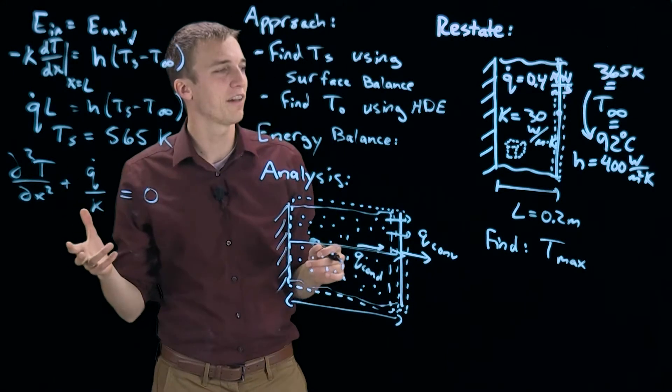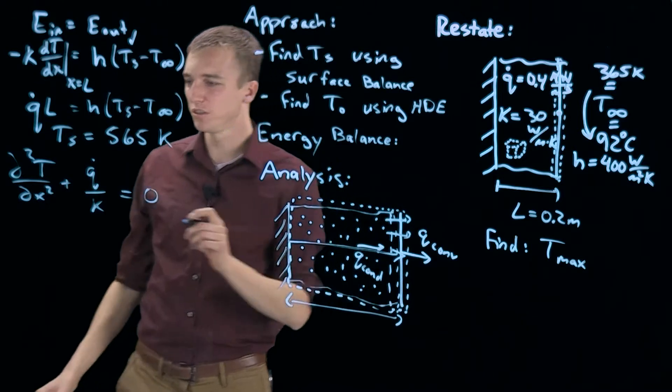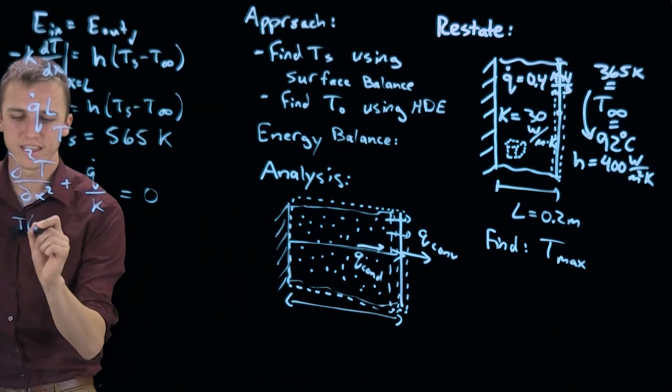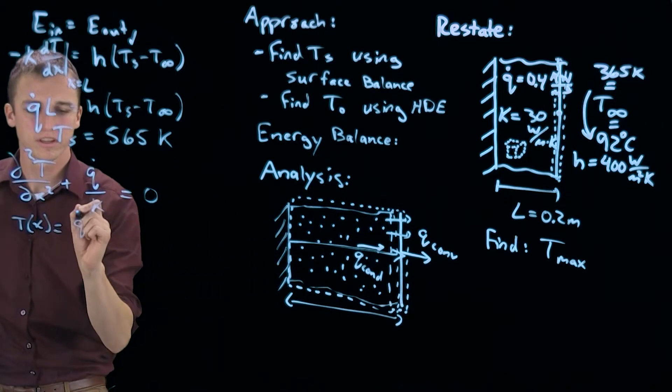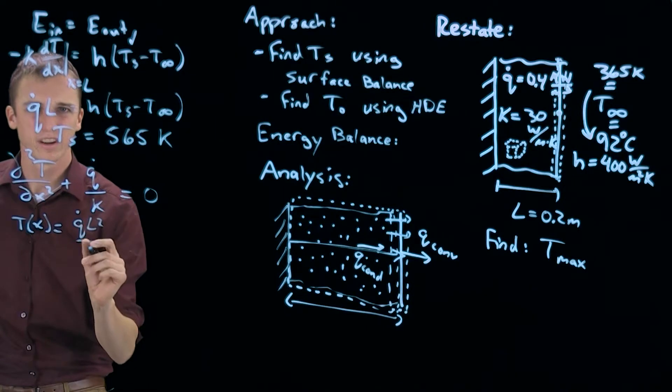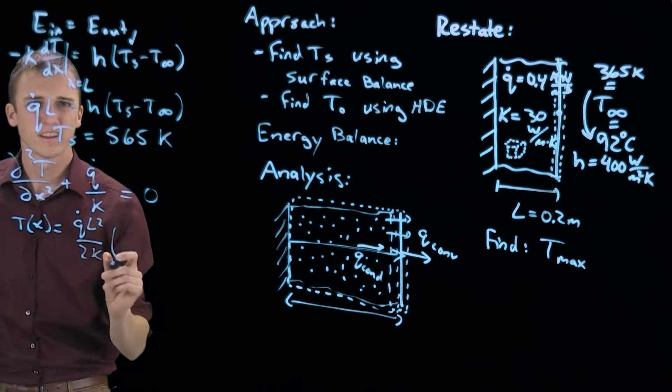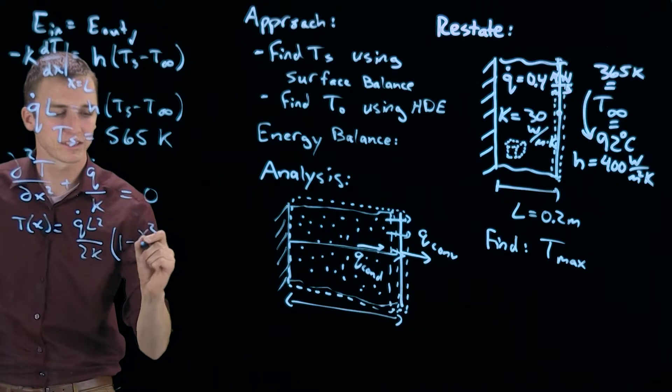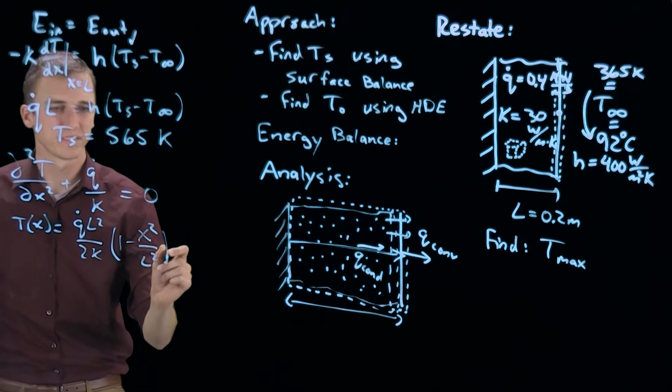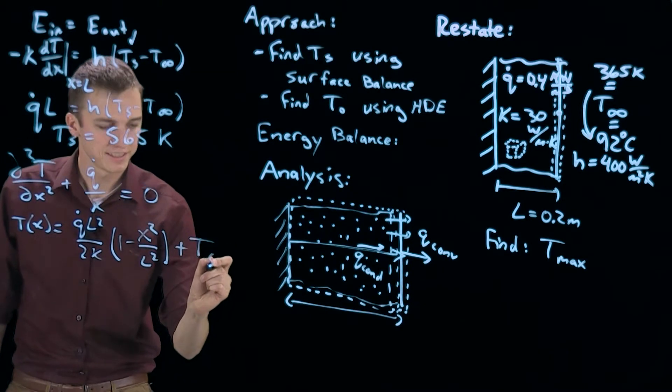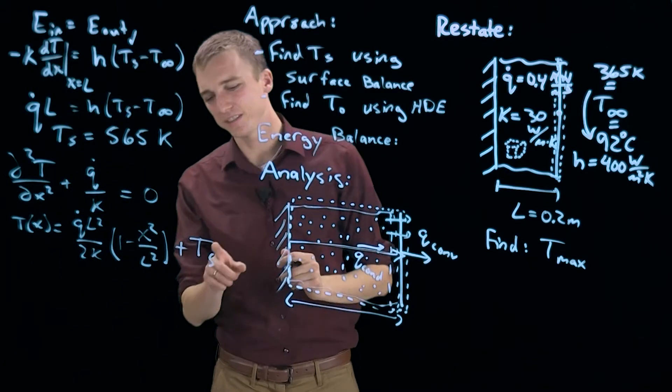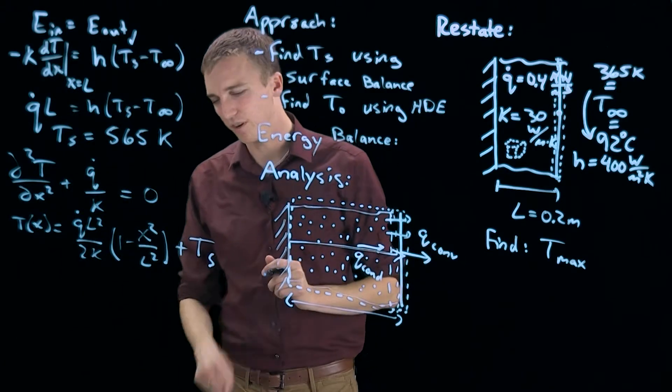We are not going to cover how this would be solved, but the solution looks like this. Tx equals q dot l squared over 2k times 1 minus x squared over l squared plus Ts. Now you see why we needed to solve for Ts first, because it is right here in the equation.